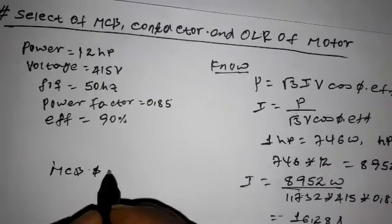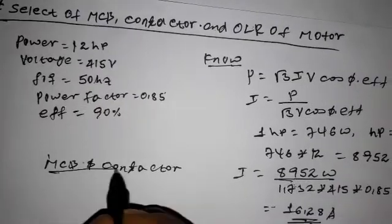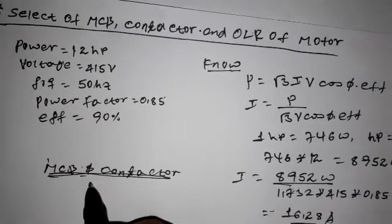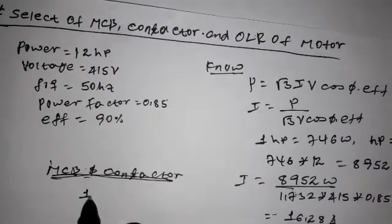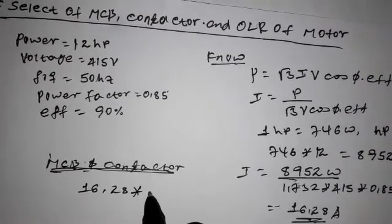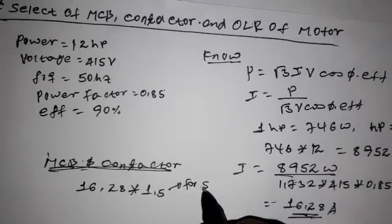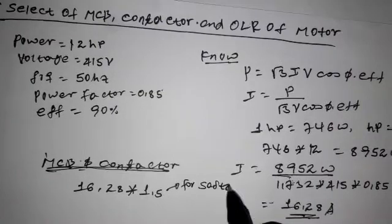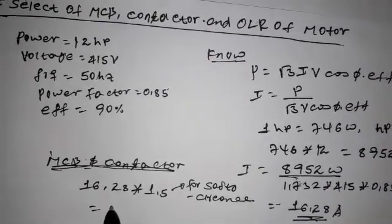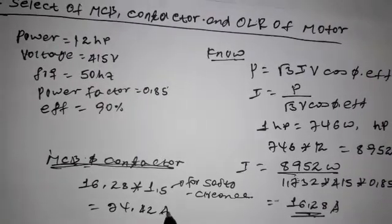Contactor and breaker, MCB and contactor, it is times 1.5. 1.5 means it is for clearance, it is safety. Clearance of current is too much. Then, 24.42 Ampere.